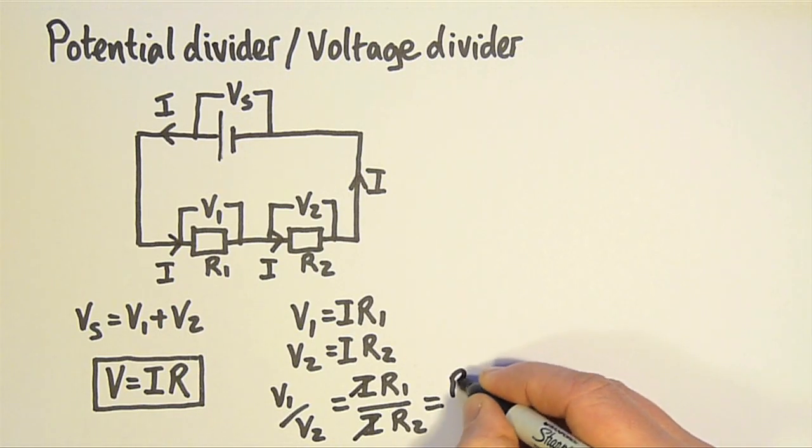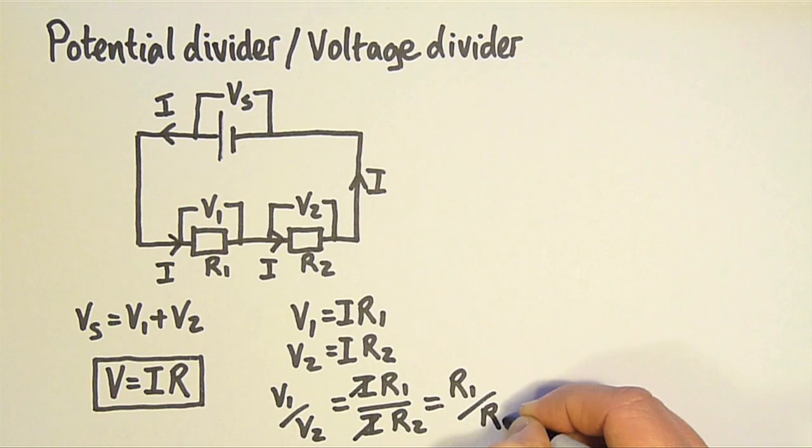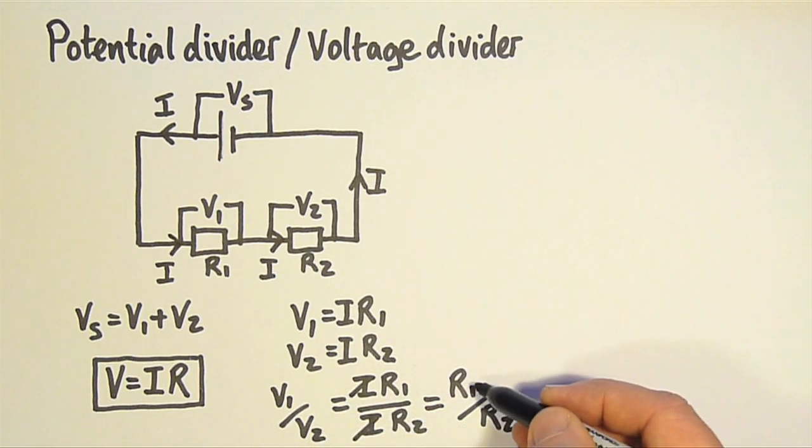That gives me the result that I want. V1 divided by V2 is equal to R1 divided by R2. So in a potential divider circuit, the ratio of the voltages is equal to the ratio of the resistances.